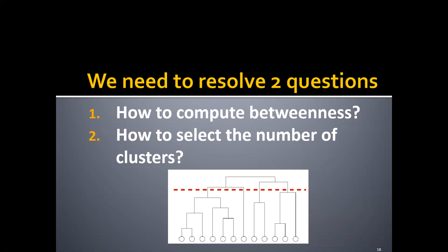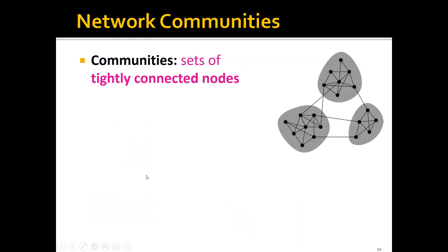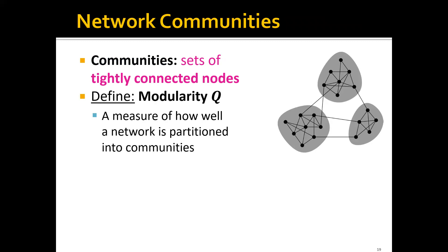Now the second question is how to select the number of clusters or communities. Remember that a community is just a set of tightly connected nodes. Therefore we can define a concept called modularity, denoted by Q, which is a measure of how well a network is partitioned into communities.